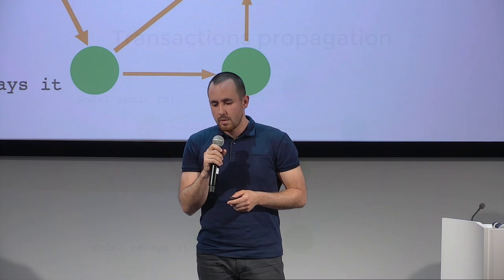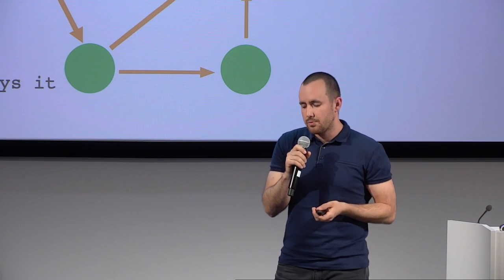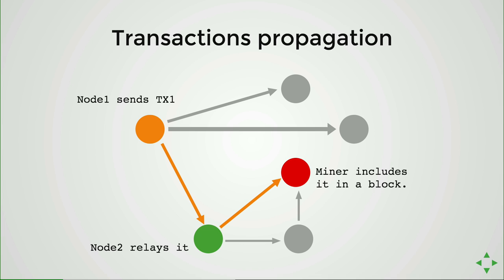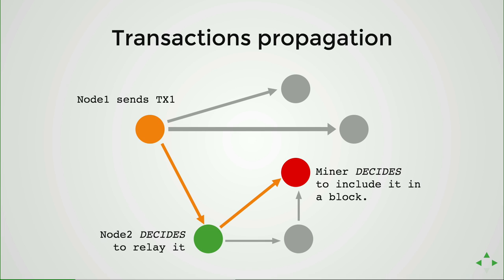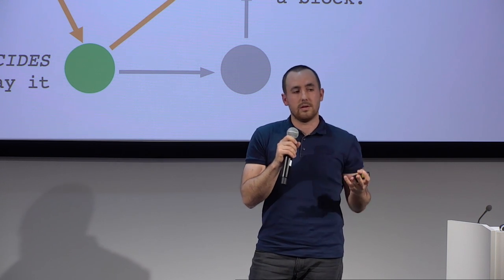So where do transactions come from — how do they end up in a block? Ethereum is a decentralized network, so if we want to include something in a block, we need to propagate it, broadcast it to other peers. Some peers relay transactions, and there are special peers — miners — able to issue new blocks and put our transactions into them. But the trick is that miners decide which transactions go into a block. There are heuristics, and miners can choose whatever transactions they want to include.